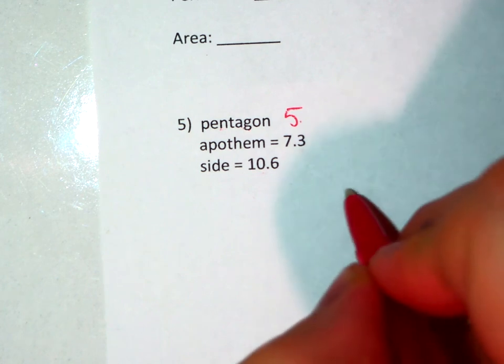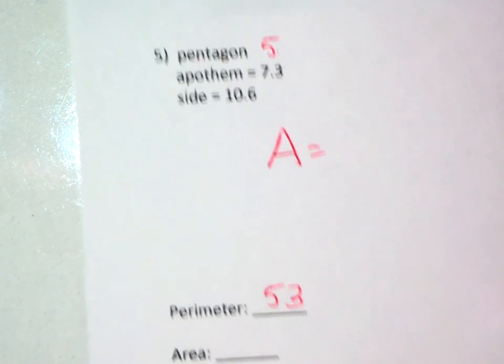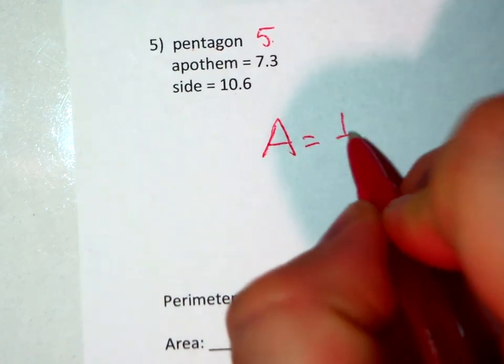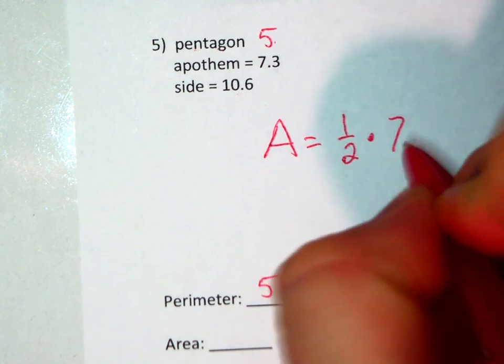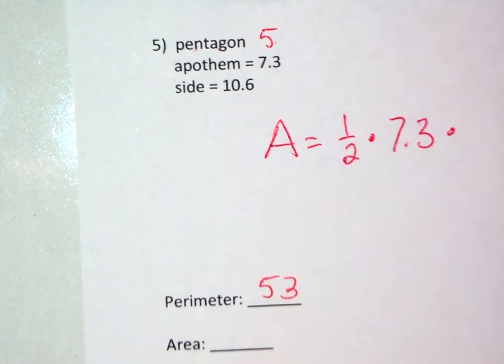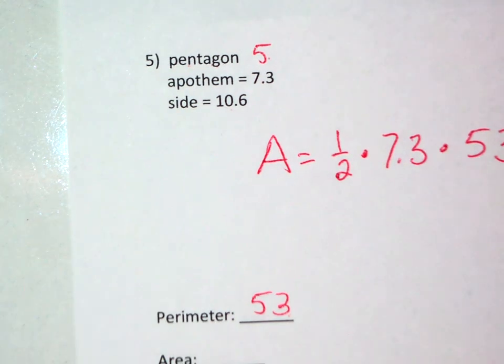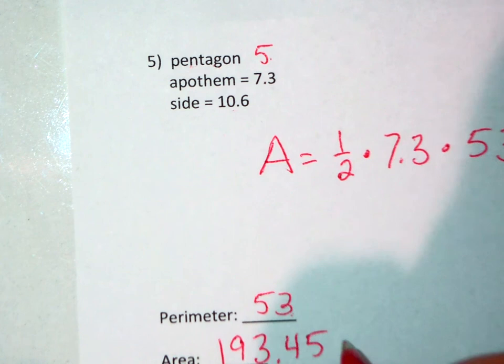So my formula would be A equals 1/2 the apothem, which is given to us, times the perimeter. So my area is 193.45 units squared.